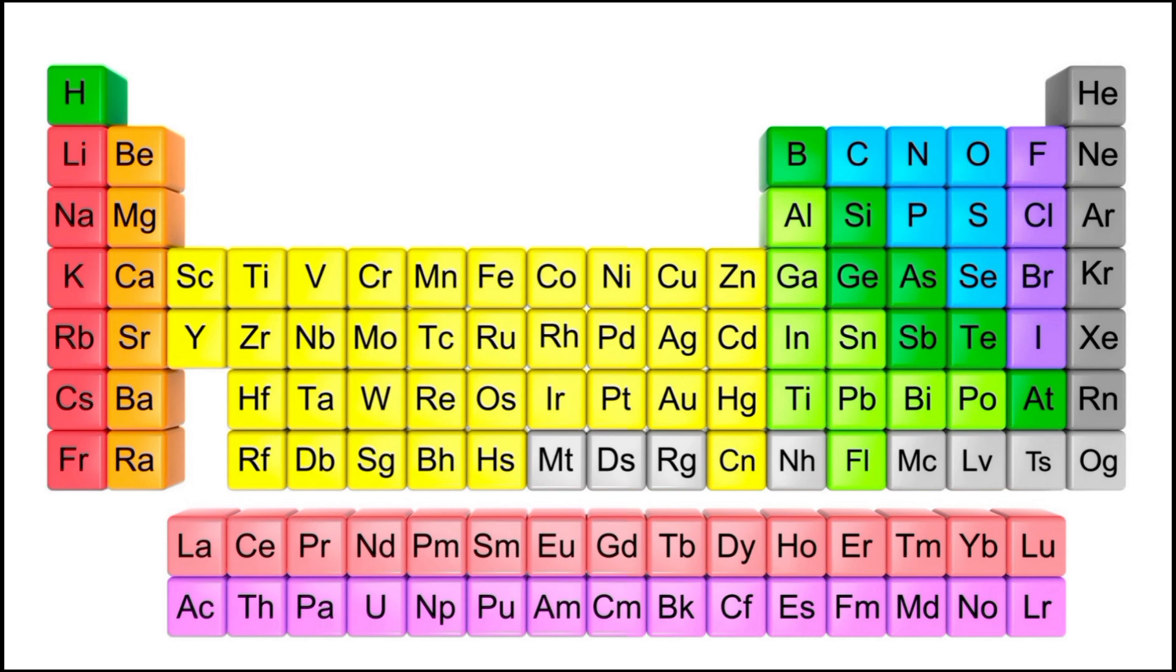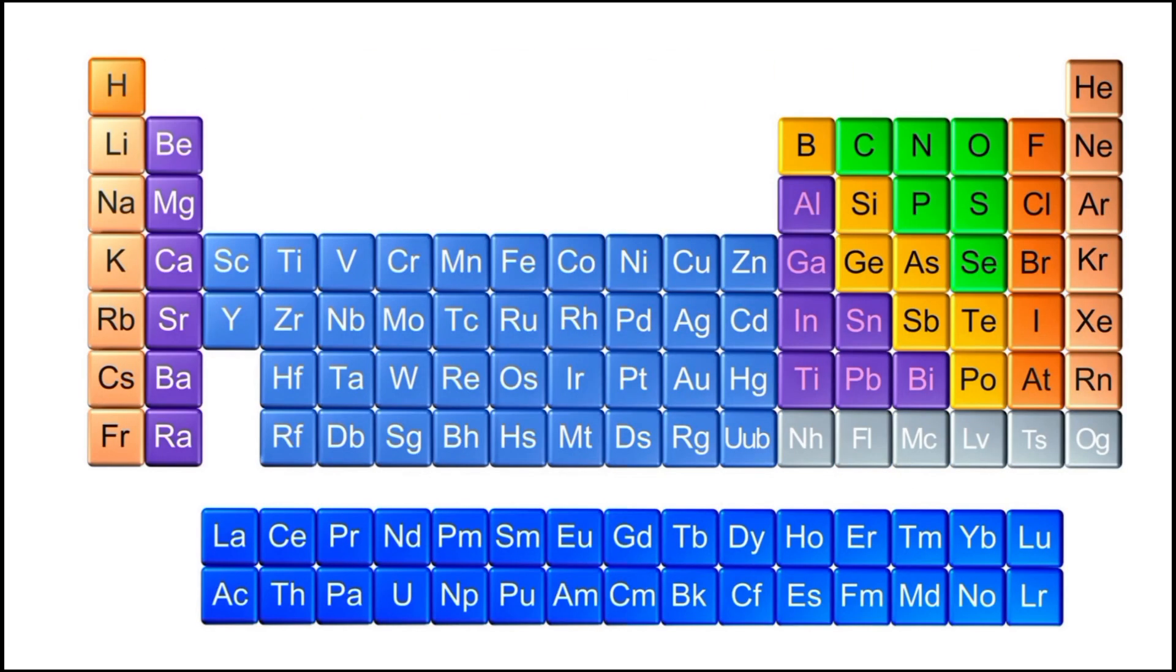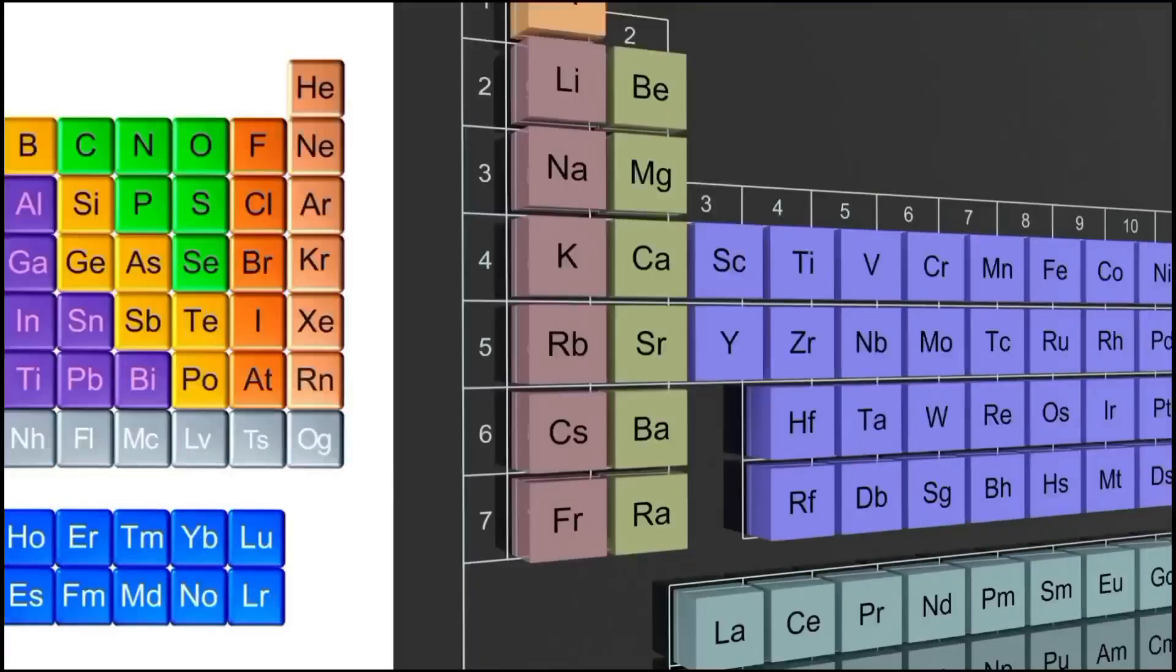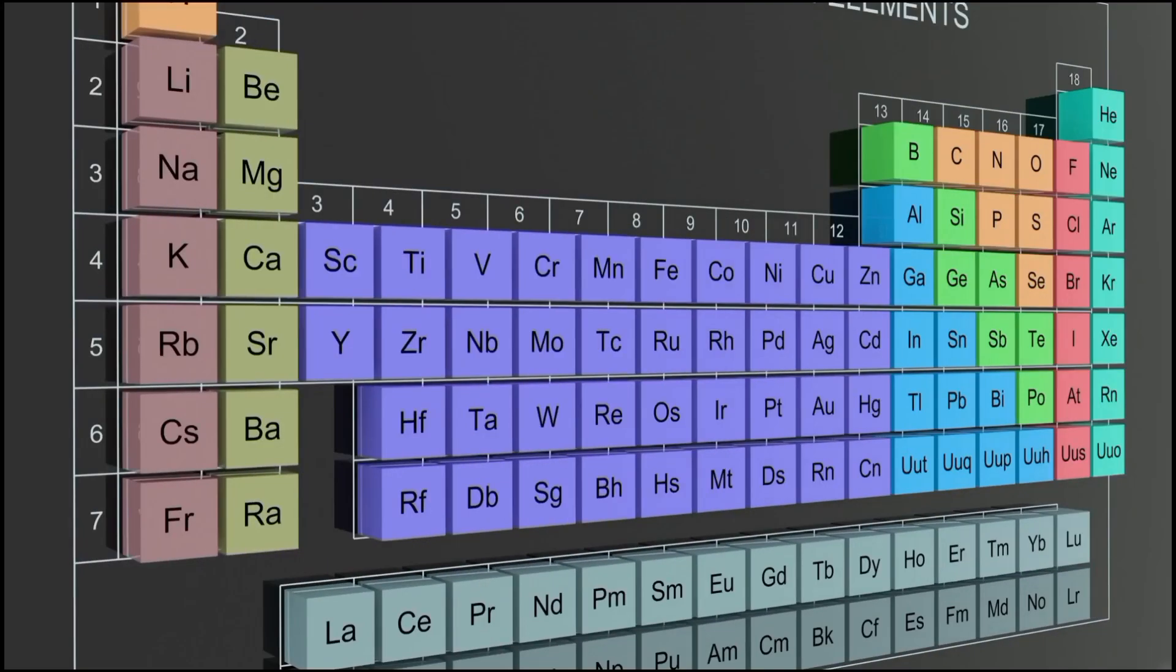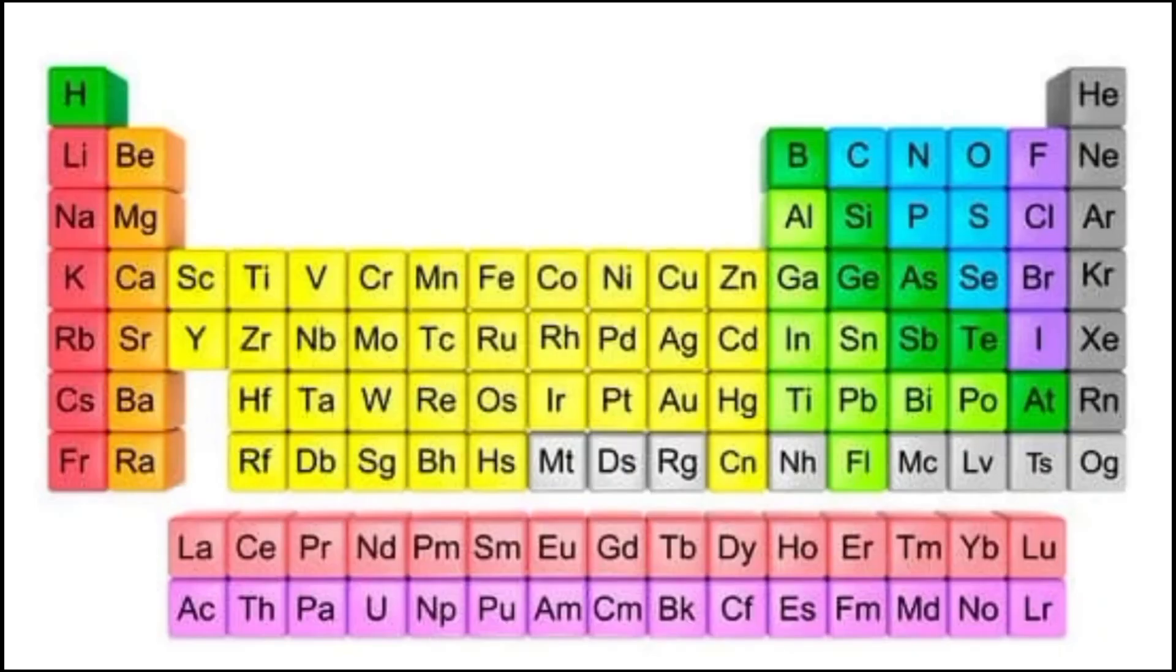Groups, on the other hand, are characterized by similar outer electron configurations. Elements within the same group share comparable chemical properties due to these shared electron configurations. This arrangement facilitates the prediction of an element's reactivity, valency, and other characteristics based on its group placement.